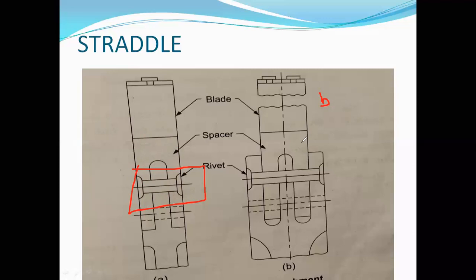In this attachment there is no necessity to cut any gap for blade insertion. One or more blades may be removed from the wheel without disturbing the remaining blades. The entire blade and spacer assembly is fastened through the rivet.